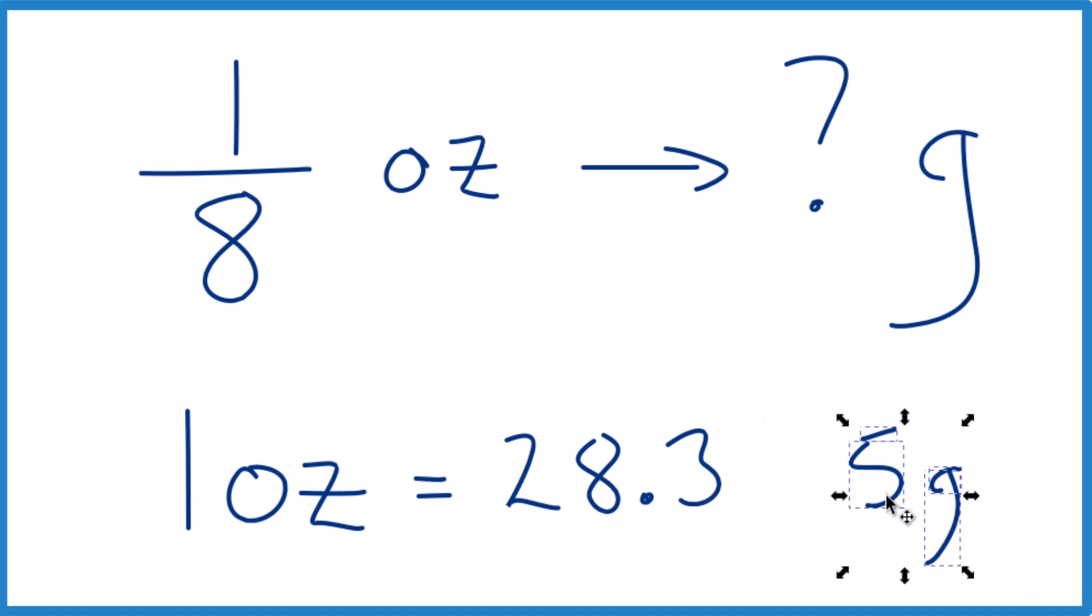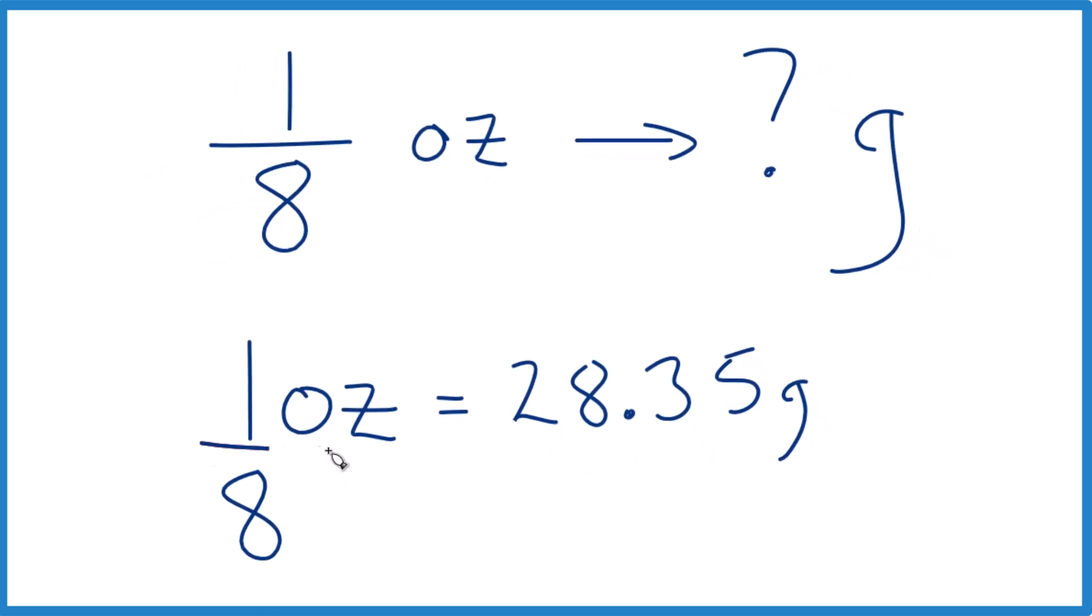If you have a super accurate balance, you might want to go out a few more digits here. So if one ounce is 28.35 grams, and we want one-eighth of an ounce, we're just going to divide both sides by eight.